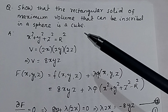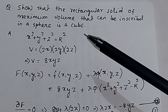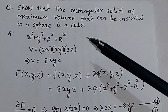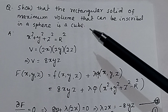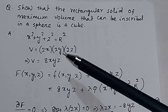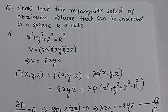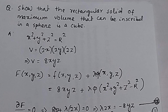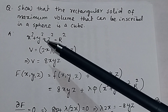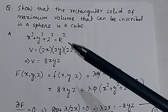Cube means the x value will be equal to the y value, which will be equal to the z value. We have to prove that x = y = z. If you have a sphere, then the equation for the sphere is given by x² + y² + z² = r².